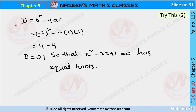Now the discriminant value D equals b² minus 4ac, written as (−2)² minus 4 times 1 times 1. Here (−2)² equals 4, and 4 times 1 times 1 is 4, so 4 minus 4 equals 0. The discriminant value D equals 0, so x² minus 2x plus 1 equals 0 has equal roots.